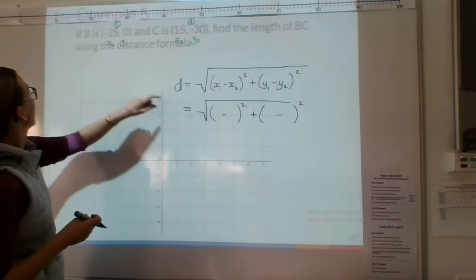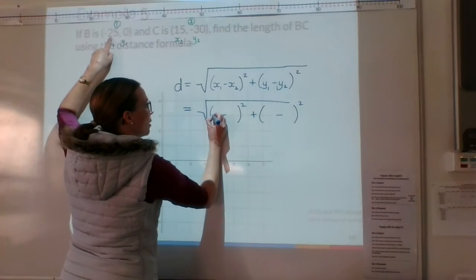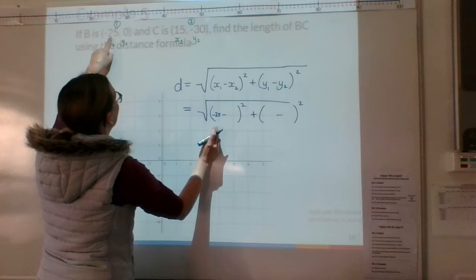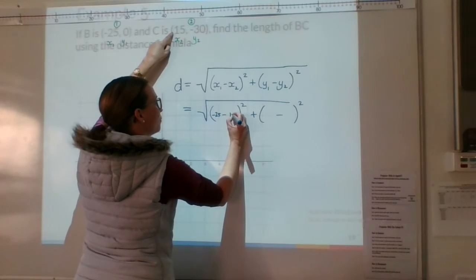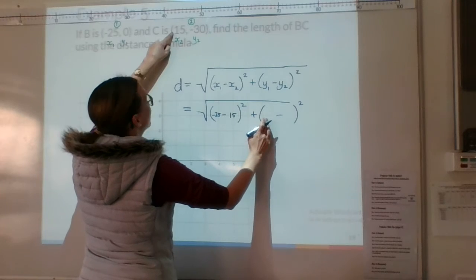Alright, so x1, x1 is negative 25. So negative 25, take away x2, 15, plus y1, 0.